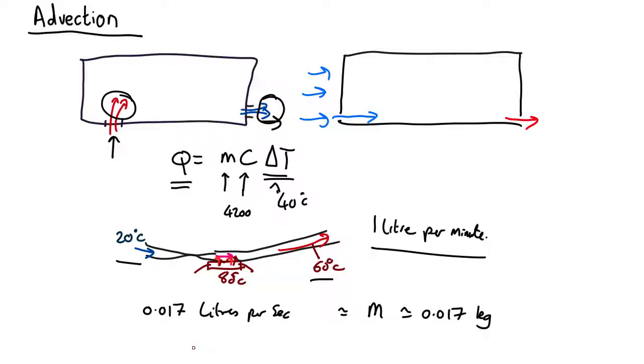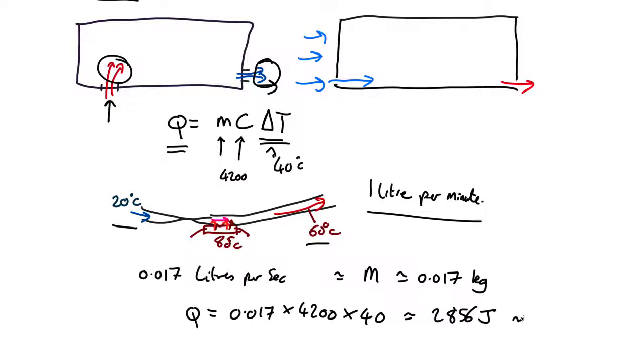So factoring that all in, we find that the heat per second is 0.017 times 4200 times 40, which comes out as 2856 joules. That's per second. This is the heat flow per second, so that means we're taking power out at a rate of about 2.9 kilowatts, which is a lot. And that means with a system like this, you could put a lot of power into your chip and still keep the temperature at a fairly reasonable level.